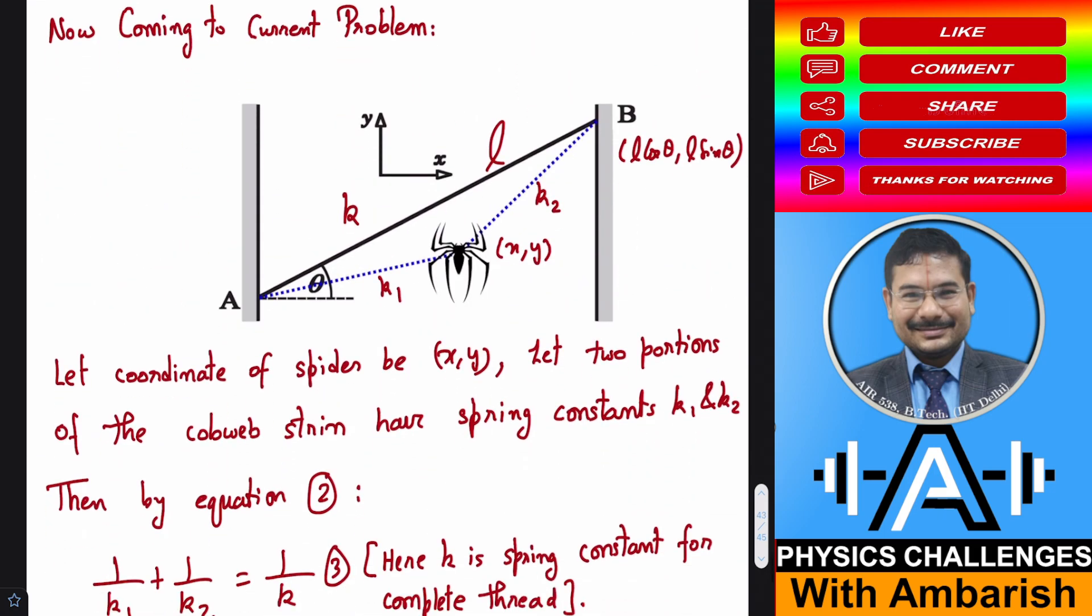Now let's come to the current problem. I have shown the coordinate of the spider at some general X comma Y. Let's say A is the origin. Now we can think of two point springs. One point spring is stretched from the origin to the spider, and another point spring is stretched from the spider to point B. These two point springs are effectively connected in series to form the original spring.